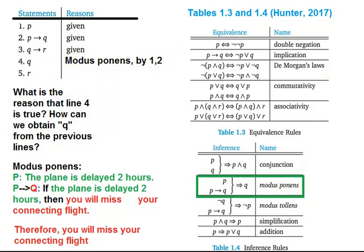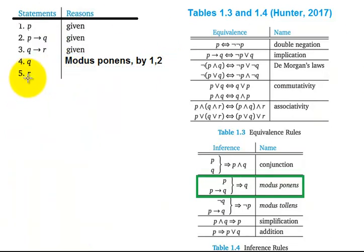So let me clear some space. Now let's look at line 5. How can we come up with R given all of these lines 1, 2, 3, and 4? Why is R true?